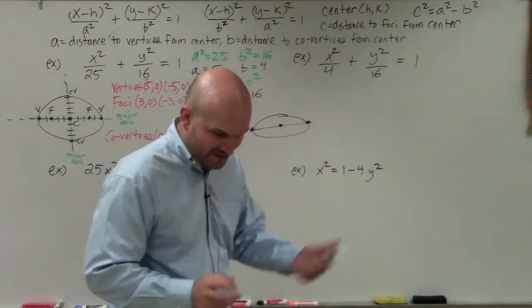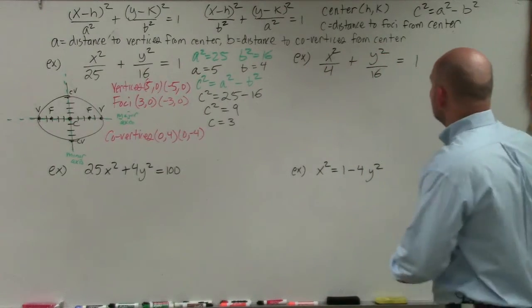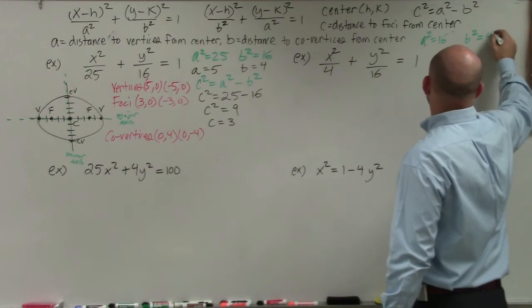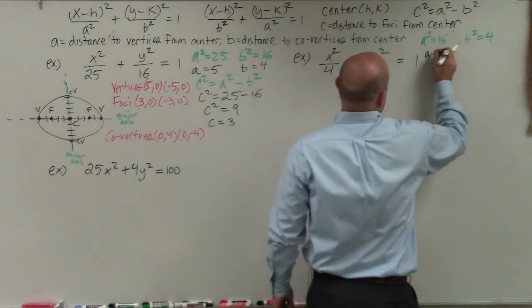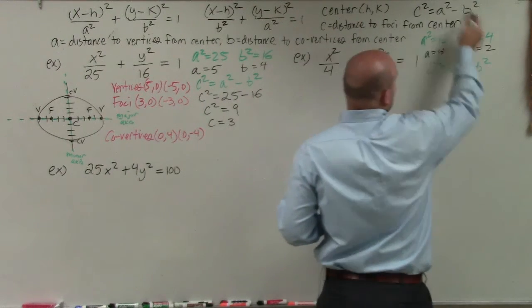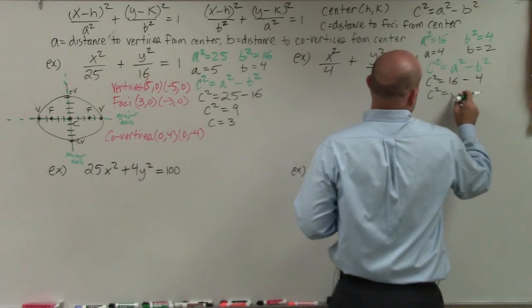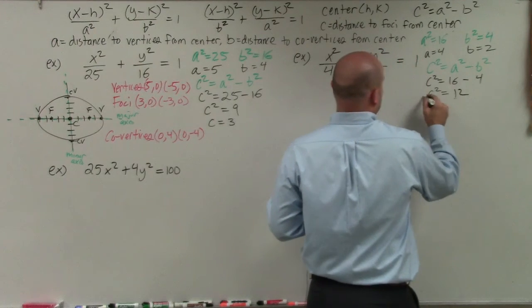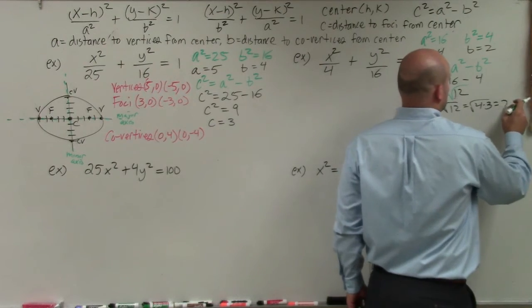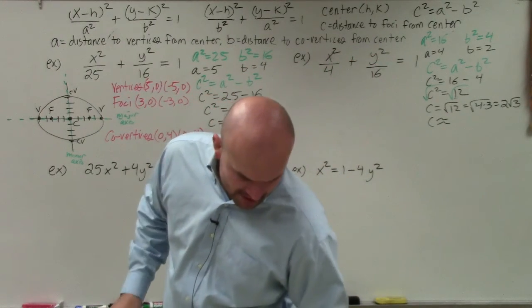On to the next problem. I always start by finding A, B, and C. Remember, A² is always larger than B². We see that 16 is larger than 4, so A² = 16 and B² = 4. Therefore A = 4 and B = 2. For C²: C² = A² − B² = 16 − 4 = 12, so C = √12 = 2√3, which approximates to 3.46.